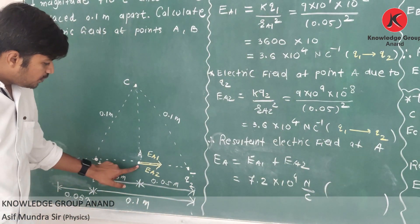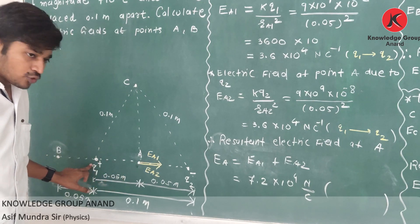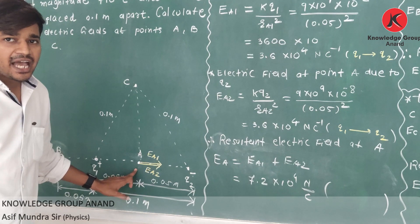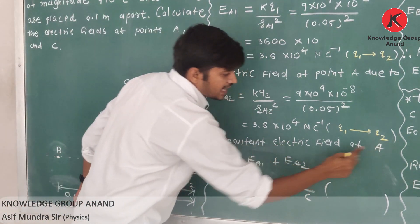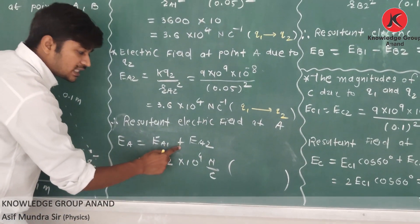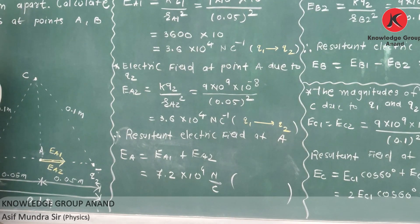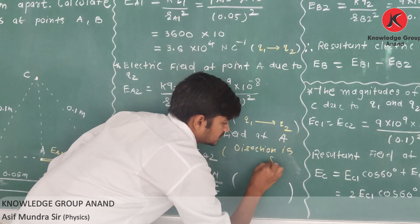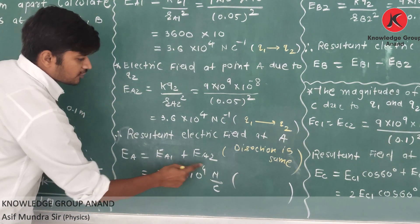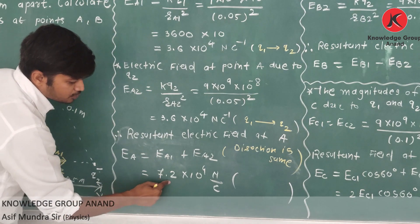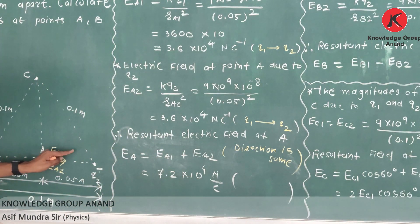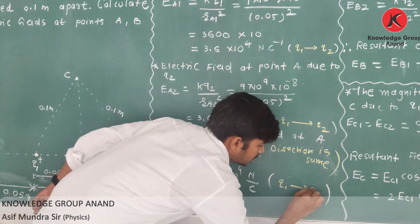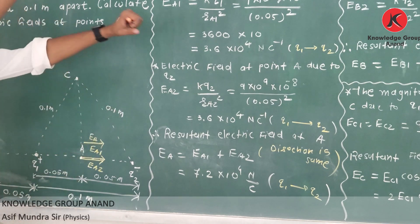From the figure we can say: at point A, electric field due to q1 is in this direction, and electric field due to q2 is again in the same direction. Direction is the same. So resultant electric field at A, eA = eA1 + eA2. That is 3.6 into 10 raised to 4 plus 3.6 into 10 raised to 4, which equals 7.2 into 10 raised to 4 newtons per coulomb. The direction is from q1 to q2.